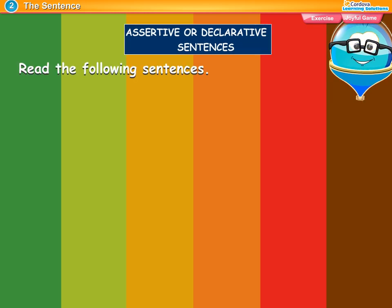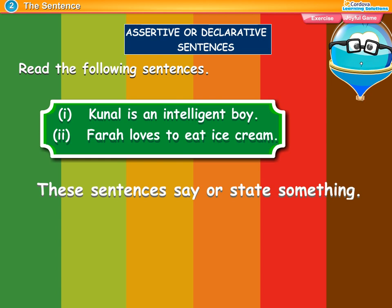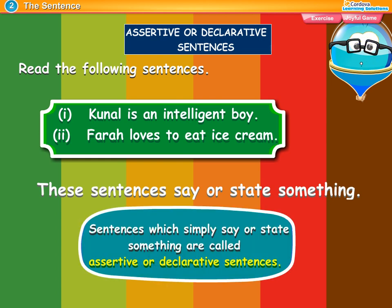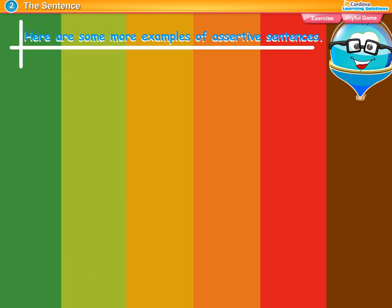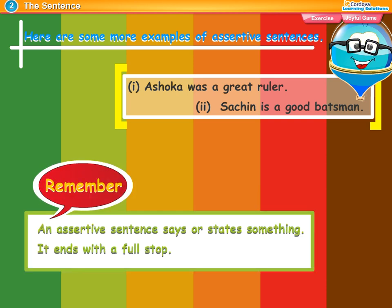Assertive or declarative sentences. Read the following sentences: 'Kunal is an intelligent boy.' 'Farah loves to eat ice cream.' These sentences say or state something. Sentences which simply say or state something are called assertive or declarative sentences. Here are some more examples: 'Ashoka was a great ruler.' 'Sachin is a good batsman.'